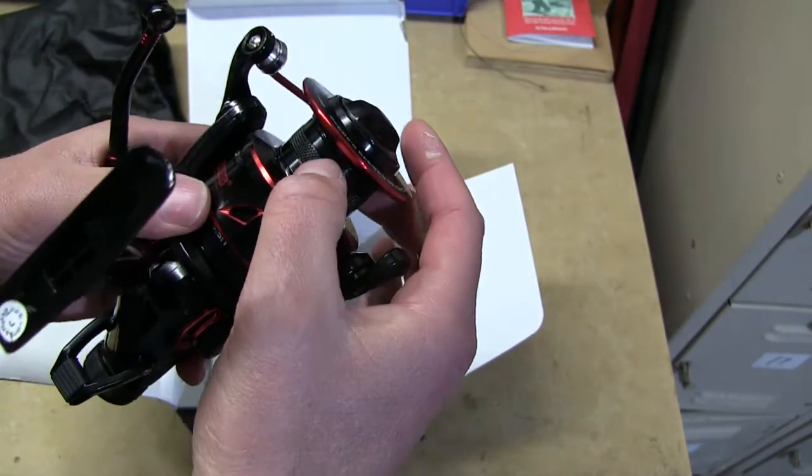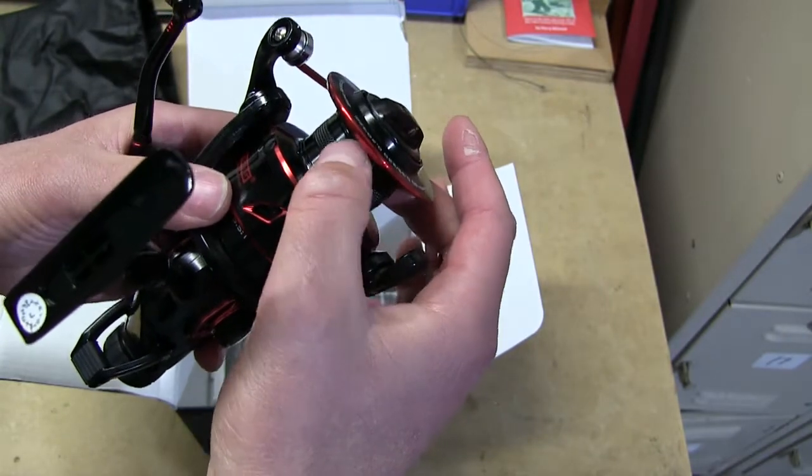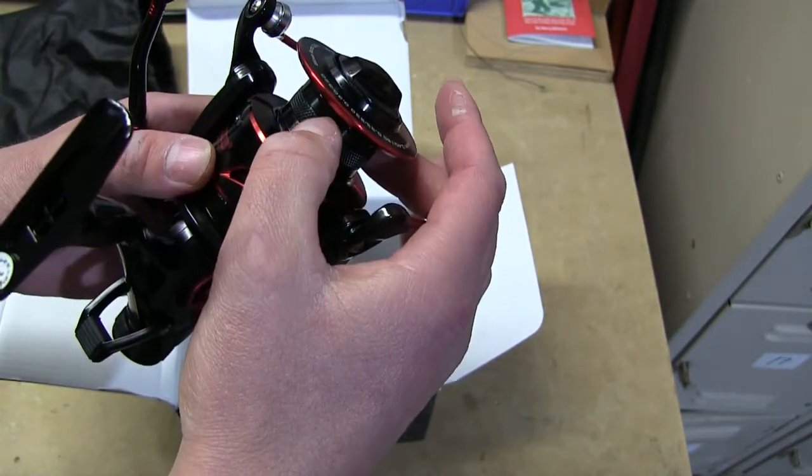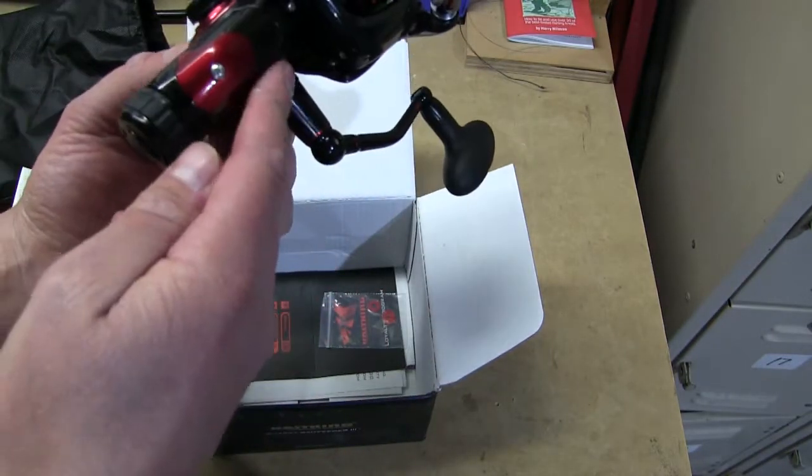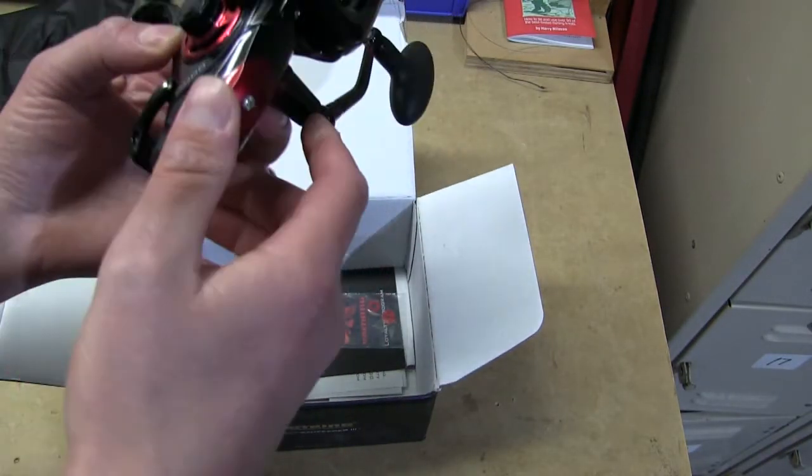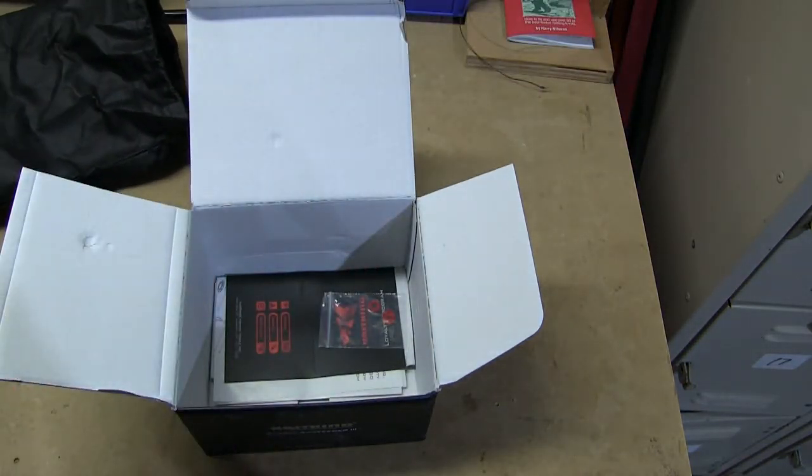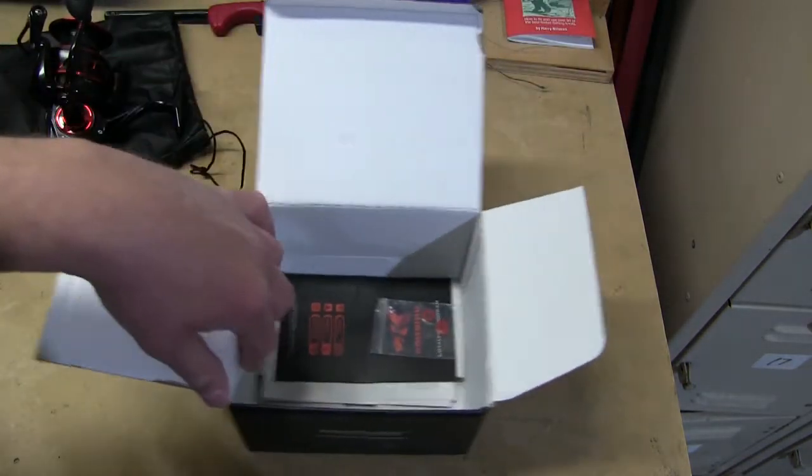It does have a nice size spool. It's got this etching on here to kind of hold your line on, so that's kind of nice as well. It looks to be a really, really good-looking reel. Let's pull what else we got out of the box here and set that to the side.